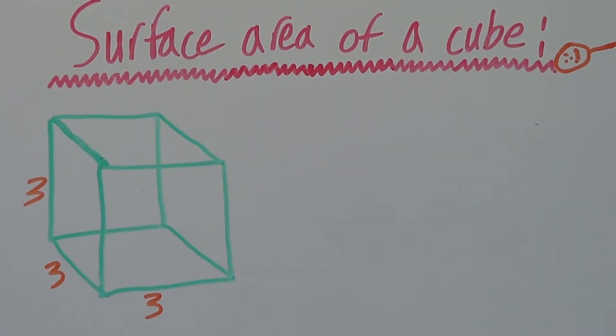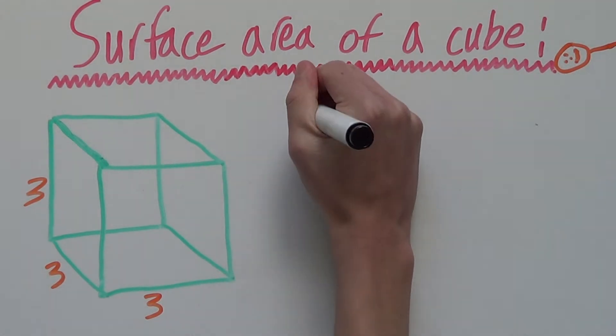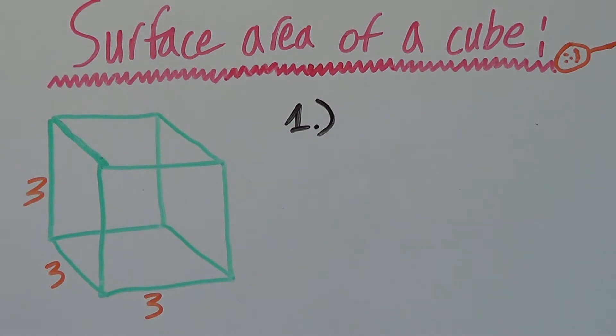Now, finding the surface area of a cube can be broken down into two steps. Step number one, find the area of just one side. Let's say we want to find the area of the bottom.